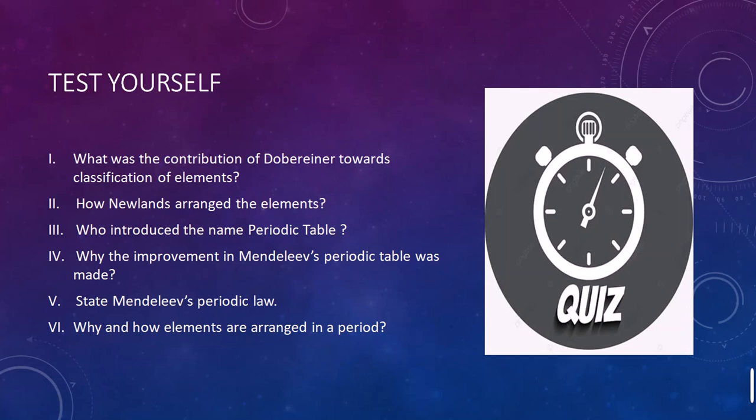Second question: How did Newland arrange the elements? He arranged elements based on their chemical properties and increasing atomic masses — that was also a demerit of his arrangement. Third question: Who introduced the name 'periodic table'? Mendeleev was the one who gave the name 'periodic table' to the arrangement and classification of elements.